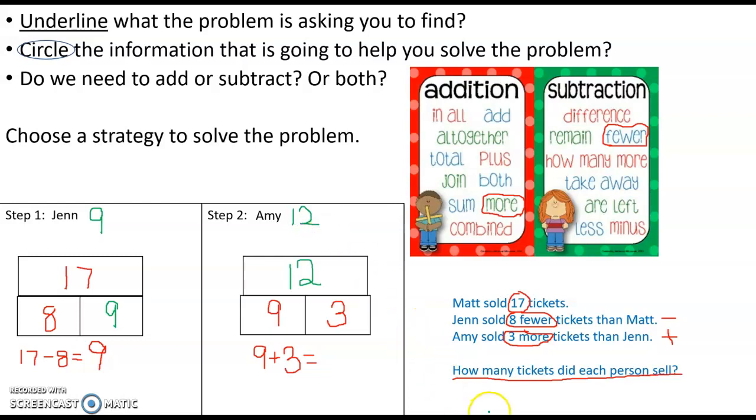So my question was, how many tickets did each person sell? Well, we know that Matt sold 17. We now know that Jen sold 9, and Amy sold 12.